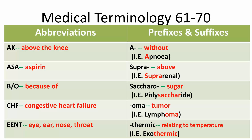Saccharo means sugar — for example, polysaccharide. Oma means tumor — for example, lymphoma is a tumor of the lymph nodes.